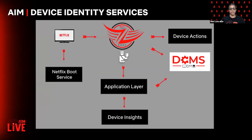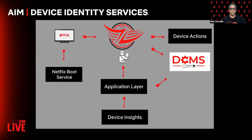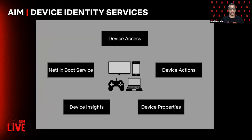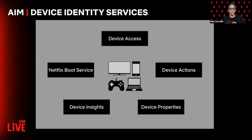The final service related to device identity is the device insight system. This service aggregates device identity and state information from the Netflix Boot service logs, the device action service, and the device property service, to track the evolution of devices across the Netflix ecosystem. It is one of the databases and datasets that provides analytic use cases for device insight at Netflix. Device identity services are interesting because there is not a single architecture for all of our systems, and we have a lot of data to deal with in both stateful and stateless ways — with services ranging from low RPS to very high RPS. Device identity services are part of the Netflix experience from bootstrap through to insights and analytics.